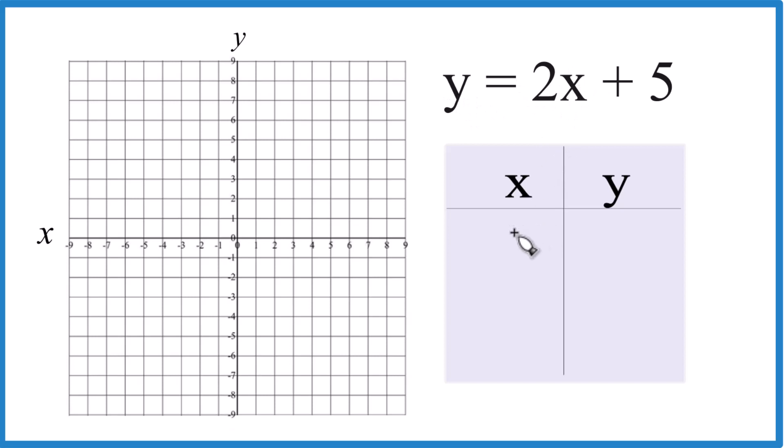Let's start out with 0. You can choose any numbers; I choose smaller numbers because I want it to fit on my graph. 2 times 0, that's 0. 0 plus 5 is 5.